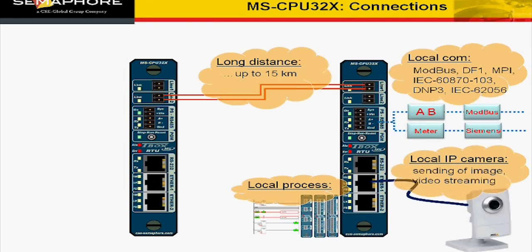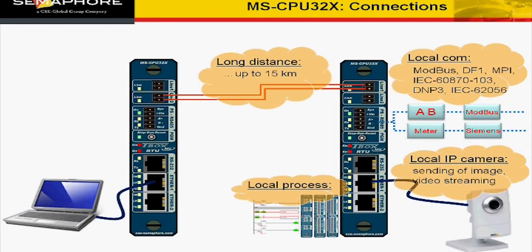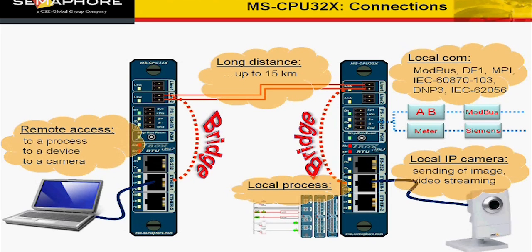An IP camera is connected to an Ethernet port of the CPU. This allows streaming access or sending of snapshots in case of alarms. A PC, connected at one end, can access the remote TBOX through bridge configuration. This makes the CPU act as a big switch, transparent to any IP communication.